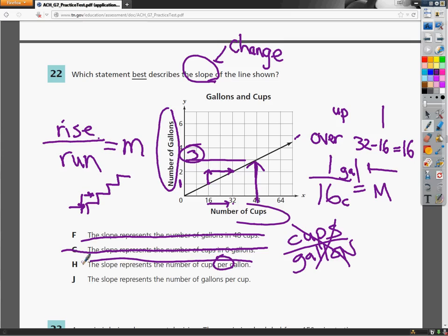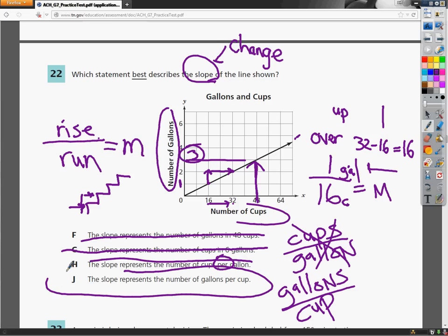J, on the other hand, has that per in there, which means divide and has that whole feeling of change to it. And it says gallons per cup. And our slope is one gallon per 16 cups. So that totally works for me. The gallons is on top, cups is on the bottom. It's got the whole feel of change. So the answer to number 22 is J.